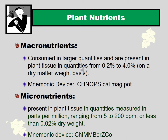A mnemonic to remember the macronutrients is 'SCHNAPPS Cal Mag Pot' — standing for carbon, hydrogen, nitrogen, oxygen, phosphorus, sulfur, calcium, magnesium, and potassium. Micronutrients are needed in much smaller quantities, measured at only about 5 to 200 parts per million in plant tissue, compared to 2–4% of plant tissue for macronutrients. A student-created mnemonic for micronutrients is 'Chimborzico' — standing for chlorine, iron, manganese, molybdenum, boron, zinc, and copper.